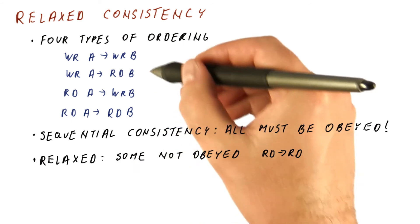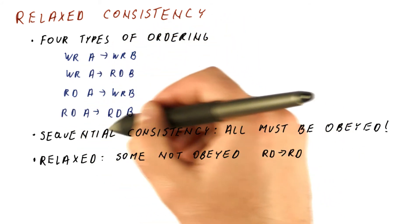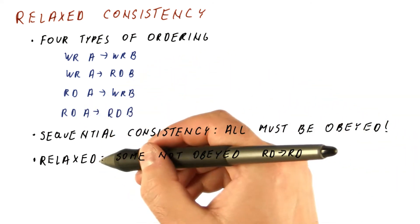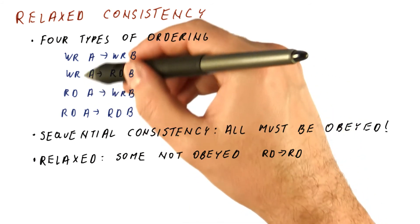If we maintain the ordering between writes and between writes and reads, but allow reads to proceed out of order, then we have a less relaxed model than if we allow reordering of other types.